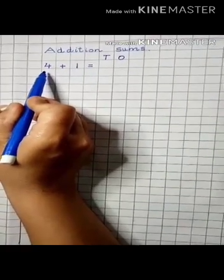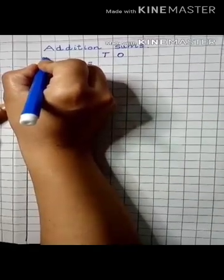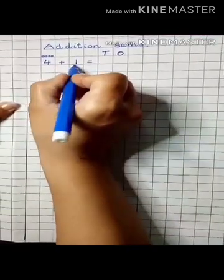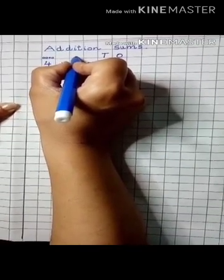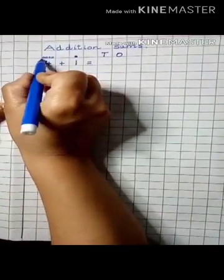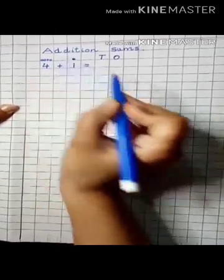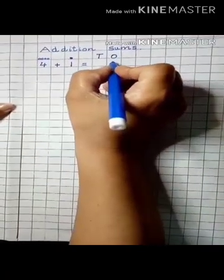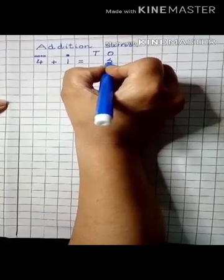Focus on this number. This is 4. On this number you have to make 4 small balls: 1, 2, 3, 4. The next number is 1, so you have to make 1 ball. Count them: 1, 2, 3, 4, 5. We get answer 5. It's a single digit, so we will write 5 under 1s house.